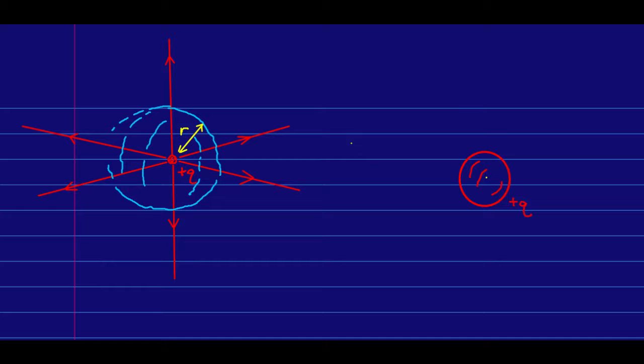So now let's apply that same argument, except to this charged sphere. This charged sphere has its own radius, which I'll call capital R. But we're again going to draw a surface around it, a spherical surface, to match the symmetry of the sphere.